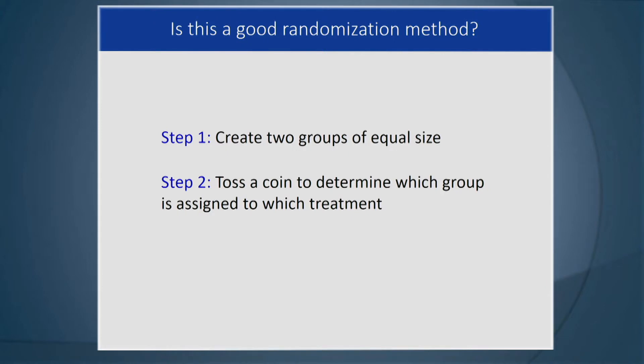Is this a good randomization method? You create two groups of equal size — 16 and 16 — and then you toss a coin to determine which group is assigned to which treatment. No, it is not a good randomization method. Why not? Because you created those two groups, and as soon as human beings are involved in the randomization process, there is potential for bias.